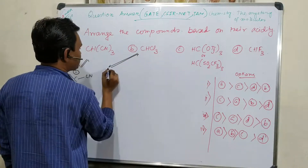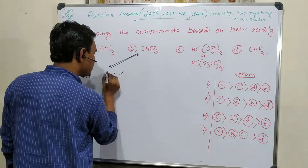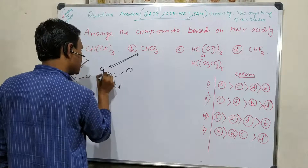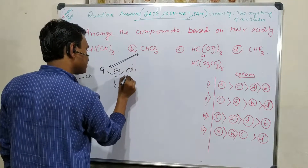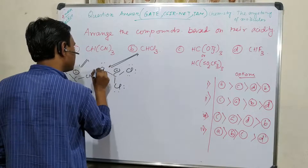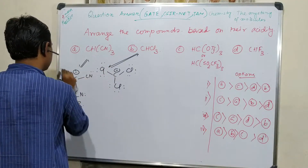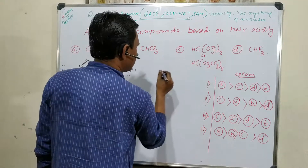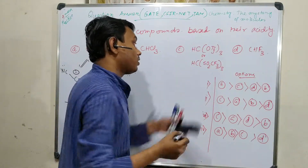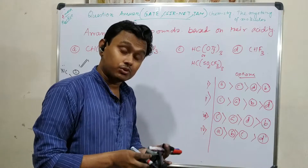If chloroform is deprotonated, it will form CCl3 minus — these are the lone pairs. If it is a triplet carbene it can give OTf, or if OTf is formed then you have to keep in mind what the formula of OTf is.